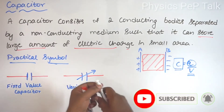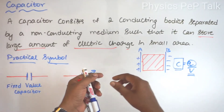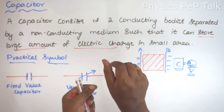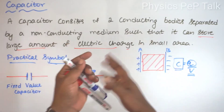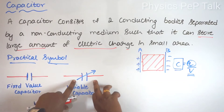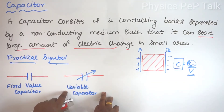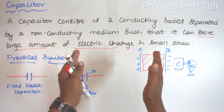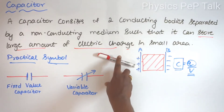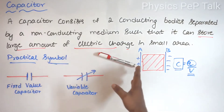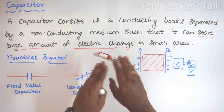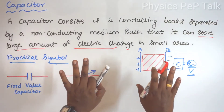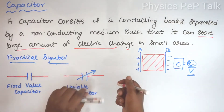Next is the variable value capacitor. For example, if you want to change the fan speed, you turn the regulator — that is a variable potentiometer. Similarly, if you have to change the impedance value in an RLC circuit, a capacitor whose capacitance can be varied over a range is called a variable capacitor. If a variable capacitor's value can be varied from 100 microfarad to 500 microfarad, that range will vary accordingly, unlike a fixed capacitor which stays at 100 microfarad throughout.